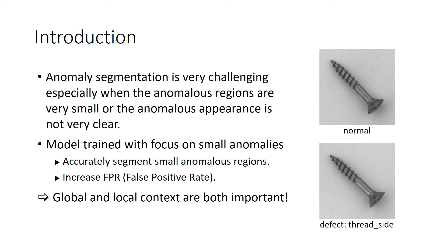If the model is trained with focus on small anomalies, small anomalous regions may be more accurately segmented, but it could possibly increase the chance of misclassifying normal regions to anomalous regions at the same time, thus making false positive rate increased. Therefore, global and local contexts are both important, and we need a very powerful feature representation learning method.